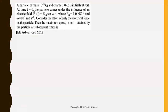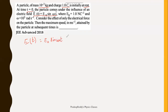Coming to the next question. A particle of mass 10^-3 kg and charge 1 coulomb is initially at rest. At time t = 0, it comes under the influence of an electric field E = E₀ sin(omega t) along the X axis, where E₀ = 1.0 N/C and omega = 10³ rad/s. Consider only the electric force. What is the maximum speed in m/s attained by the particle at subsequent times?